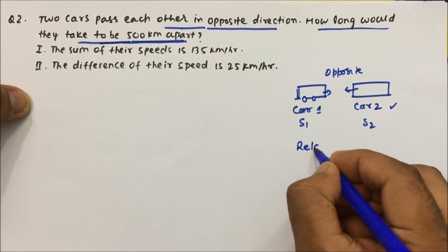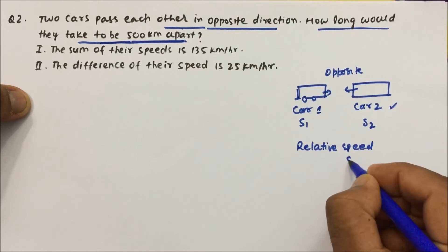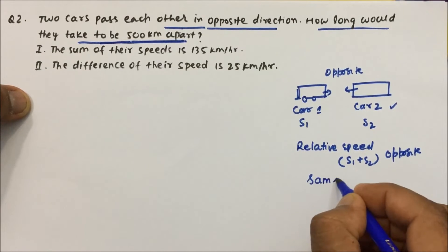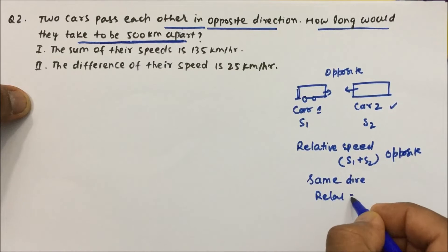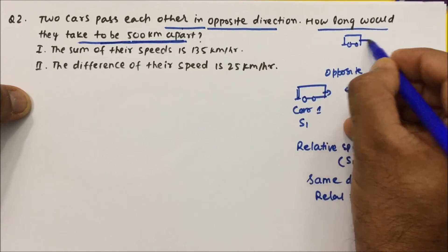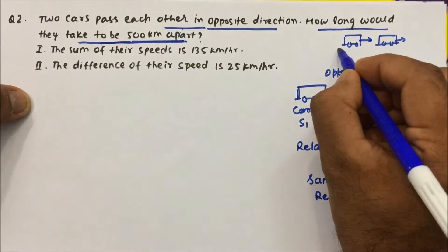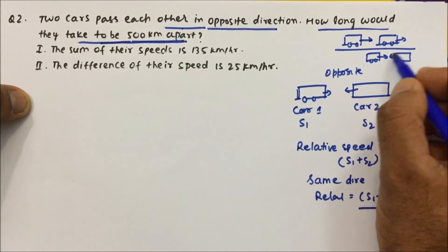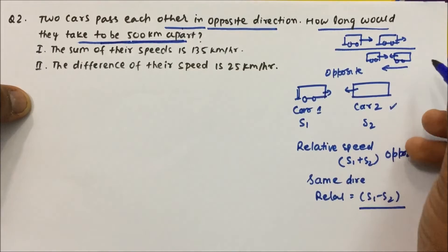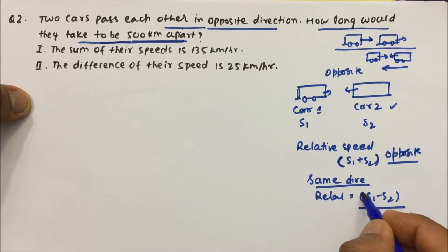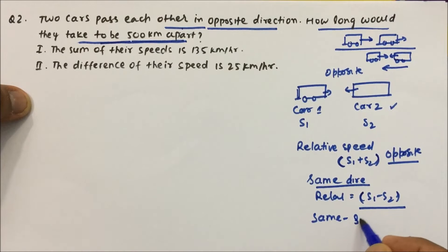When they are moving in opposite directions, the relative speed becomes s1 plus s2. When moving in the same direction, relative speed becomes s1 minus s2. You might have observed: when two trains move in the same direction, the other train doesn't seem very fast, but when they move in opposite directions, the other train seems very fast. So opposite direction means add the speeds; same direction means subtract. Remember: same means subtract, opposite means add.